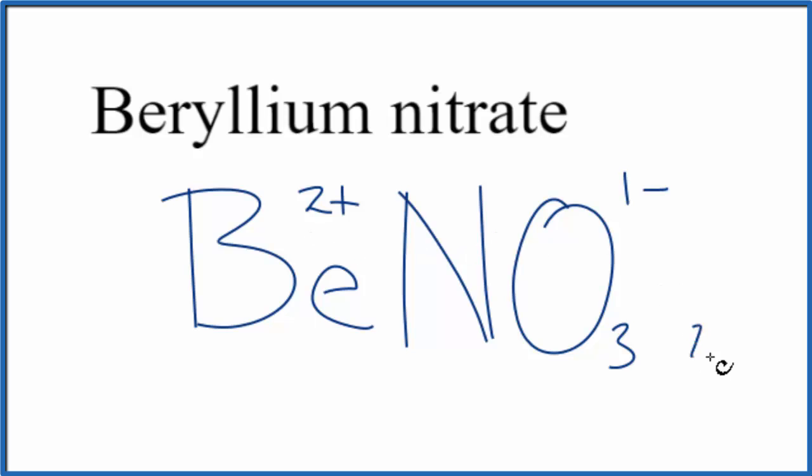So we'll put 2 out here. Let's get rid of these charges. Then for this to make sense, we need to put parentheses around our nitrate ion. So we have 2 of these nitrate ions here to balance out the charge on the beryllium.